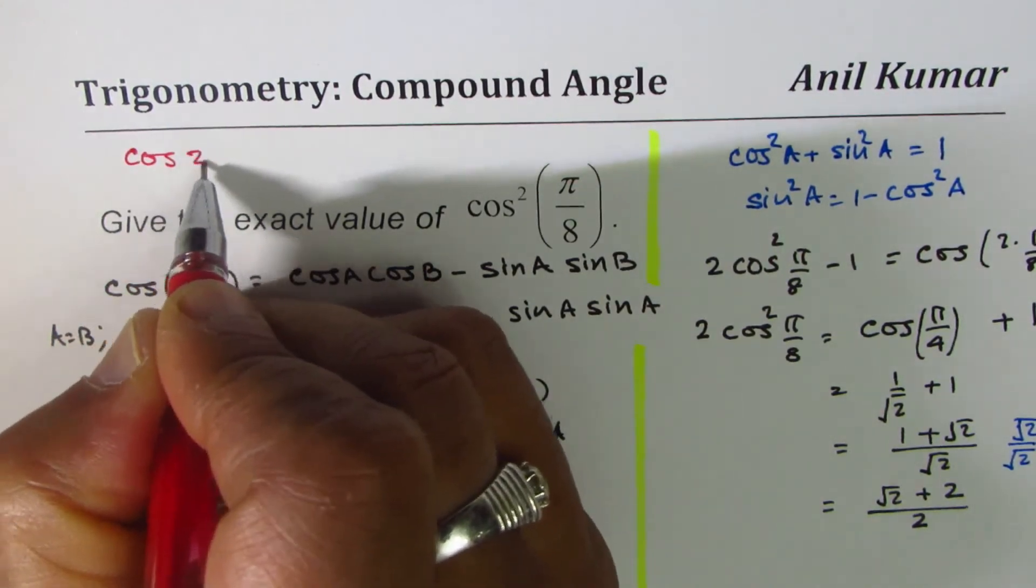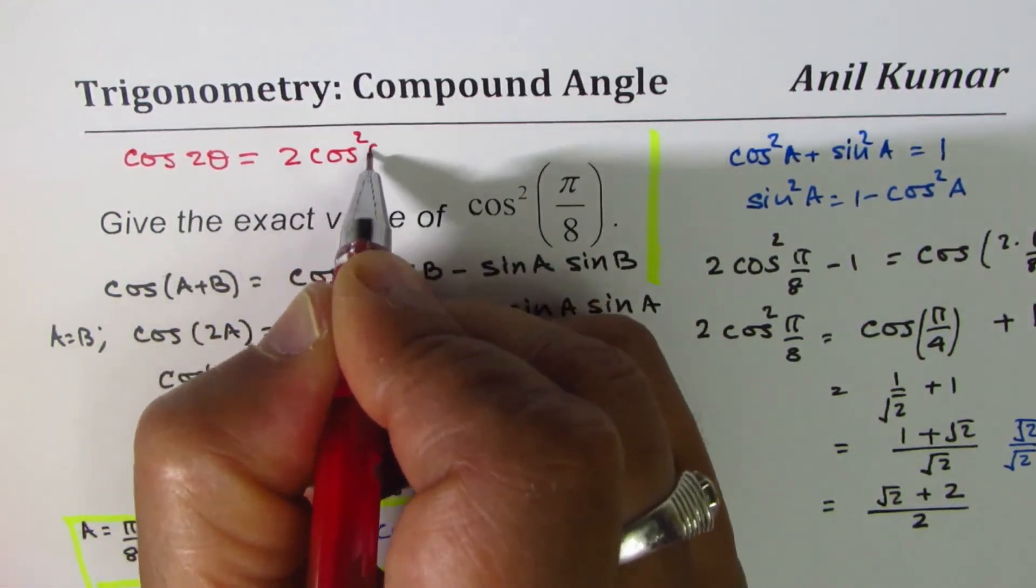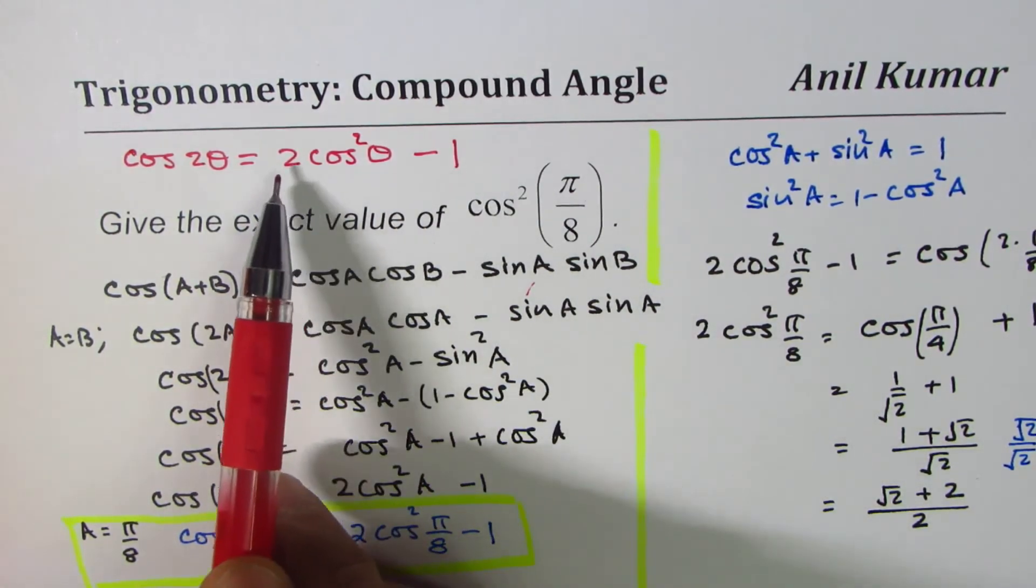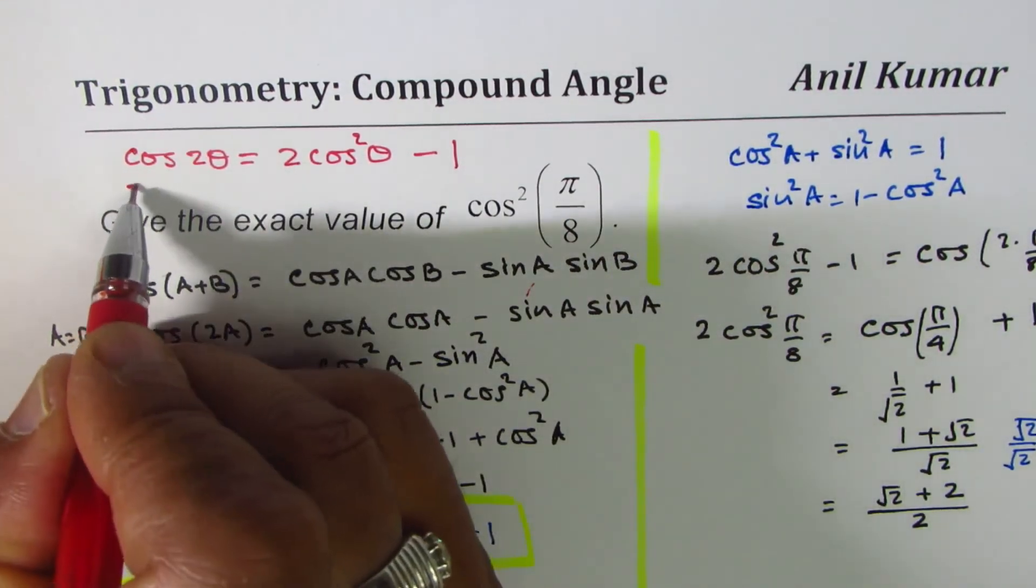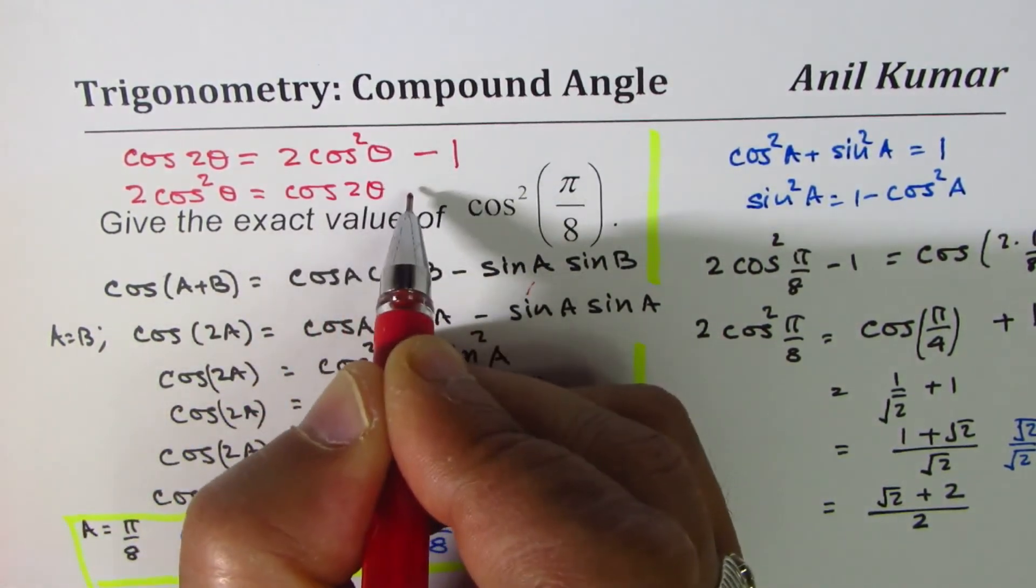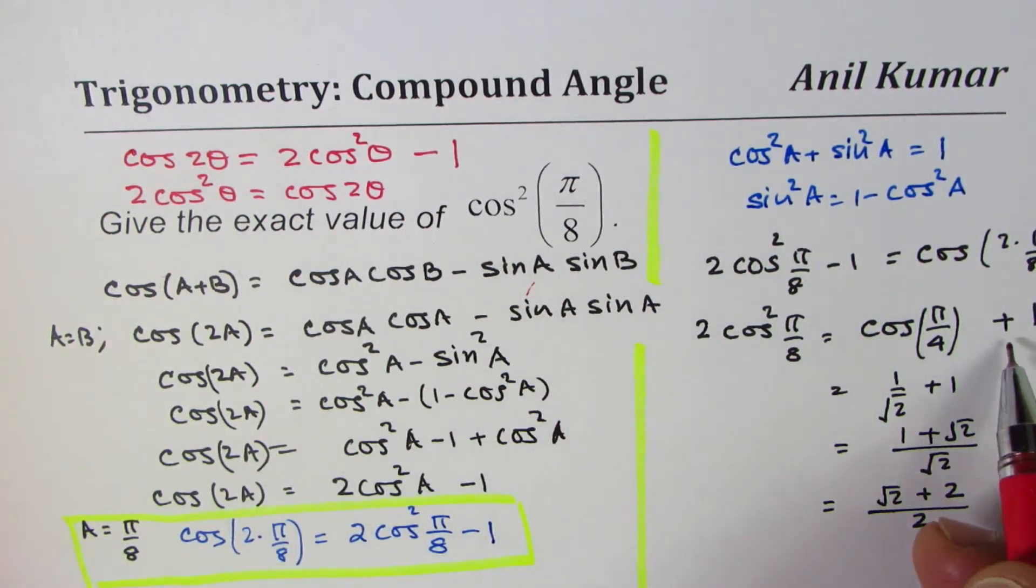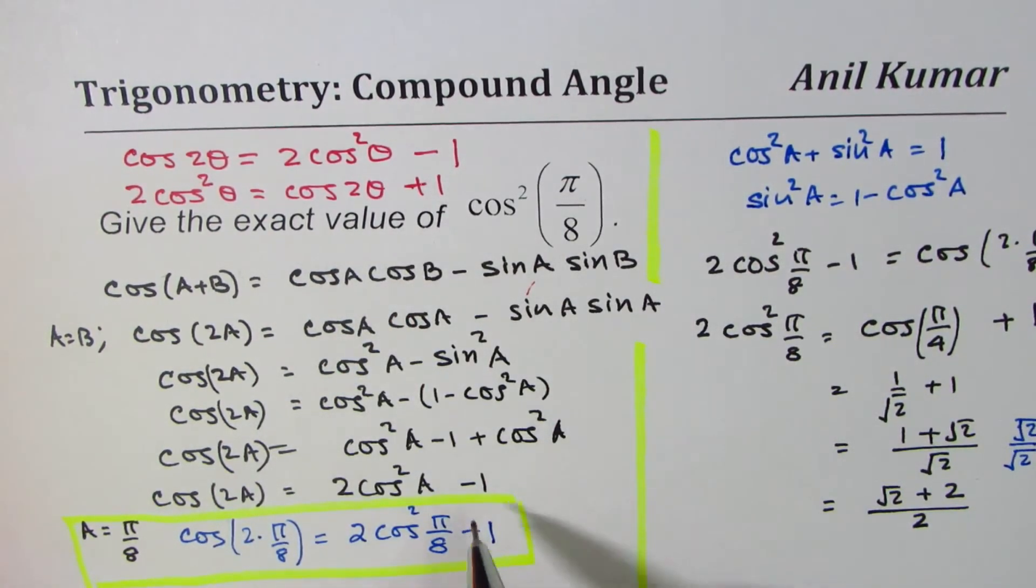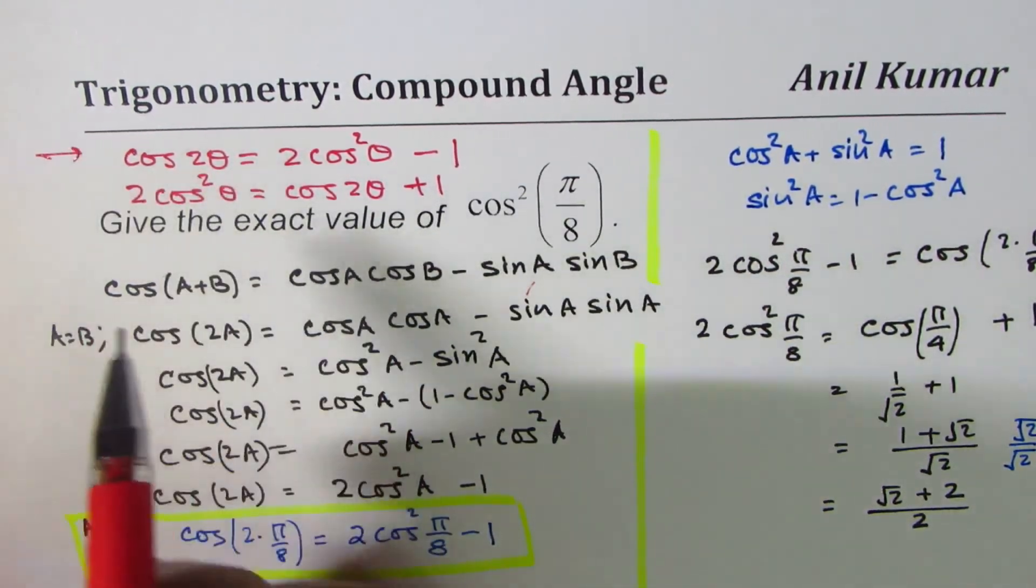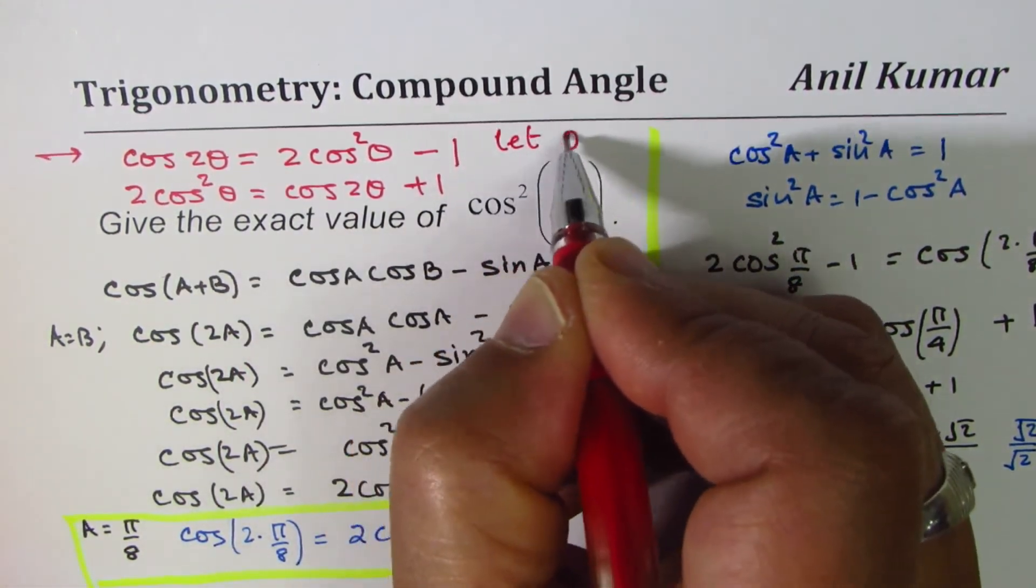You can say what is cos(2θ) equal to? That is equal to 2cos²θ minus 1. You don't have to do all this - I did this just to explain to you. Now you can rearrange this formula, right, and say 2cos²θ is equal to cos(2θ) plus 1. Right, yeah I thought I did a mistake - plus 1, that's correct. Now you should start from here. Start from here, that's the standard formula. Rearrange the formula and then say let θ equal π/8.